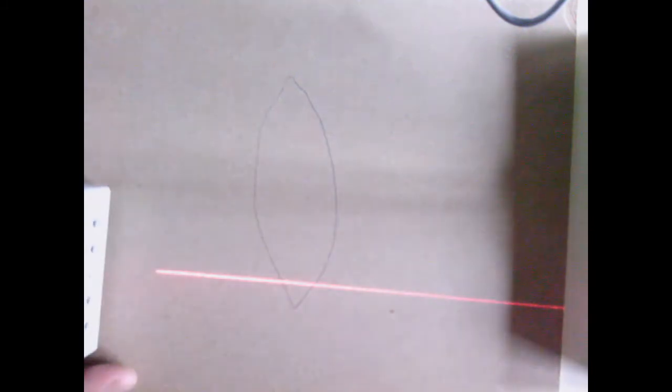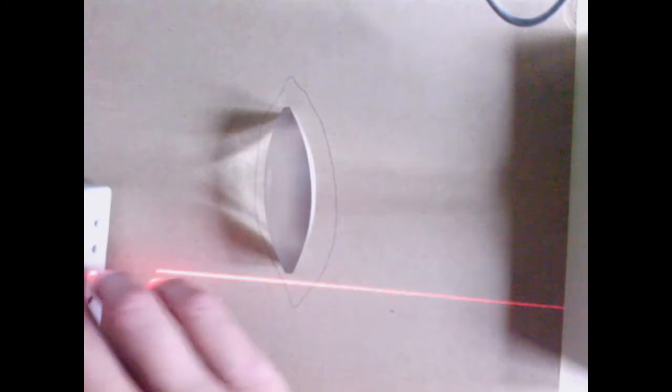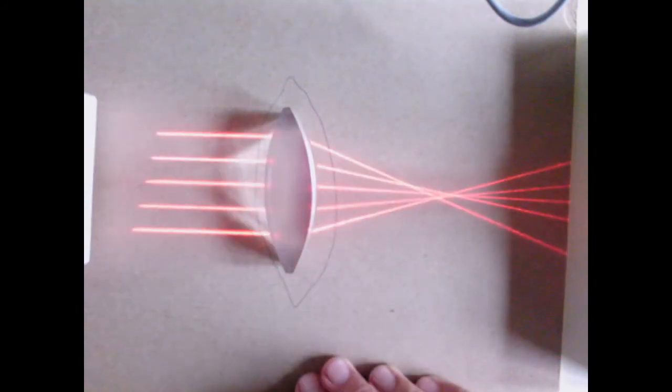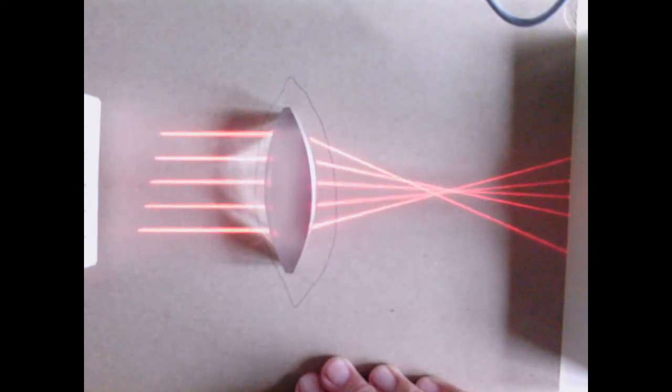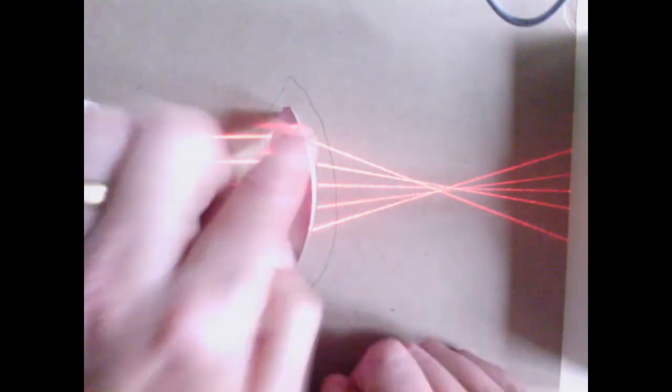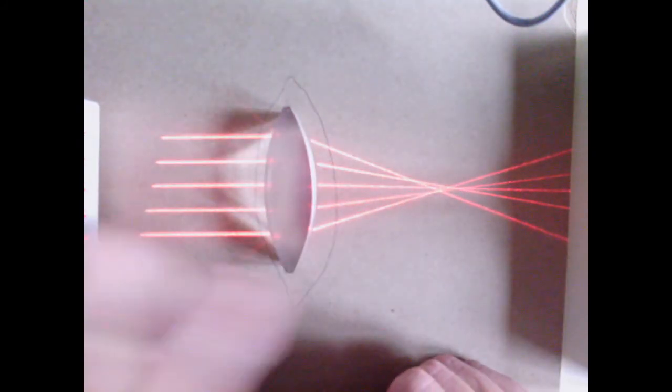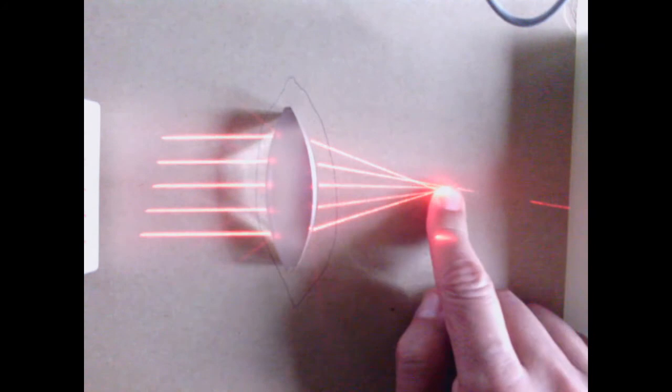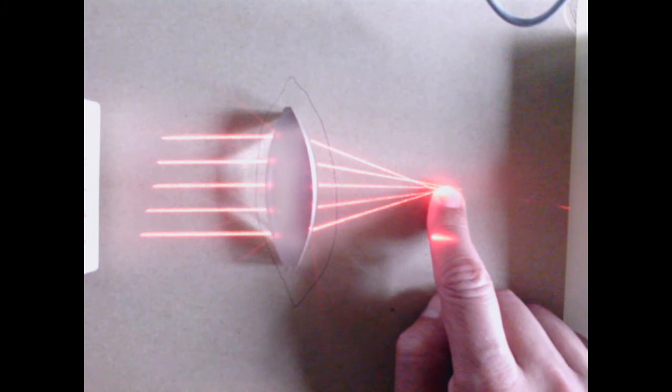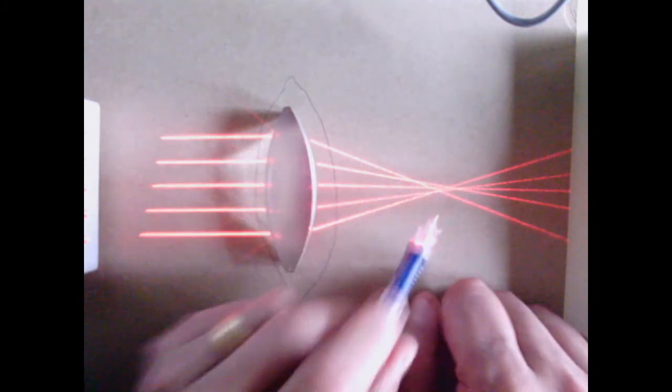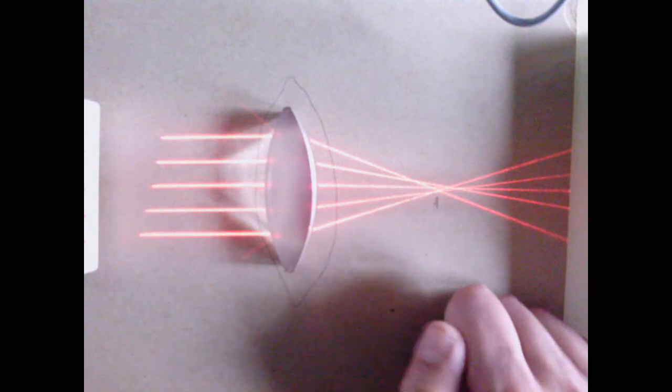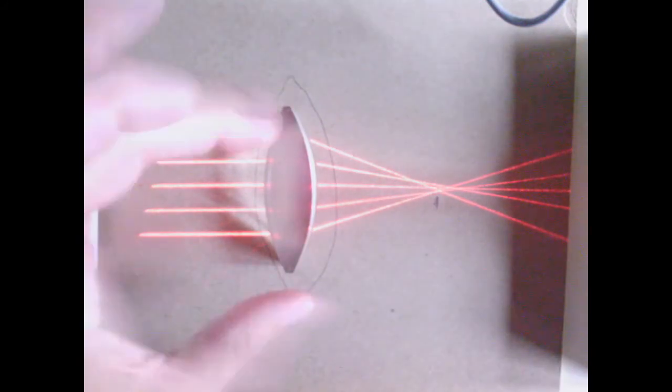So what happens when you put all that together is this. See how the top part bends it a lot, a little, none, a little, a lot. And you end up having this focus back here. And this is called the focal point, focal point back here. And the focal point is where parallel rays would all come together.